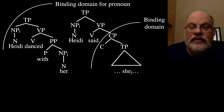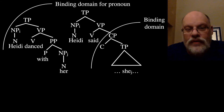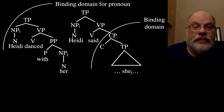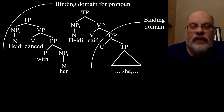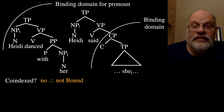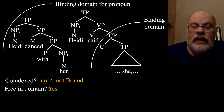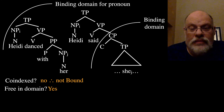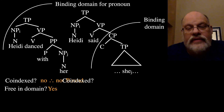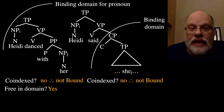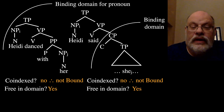Let's consider a few more cases with different indexing. These ones are going to be trivial because the indexing is different, so there are no bindings. Heidi has the index i, and her and she have the index j, meaning they have different reference. So are they co-indexed? No — and we can stop right there. It's not bound, which means that pronoun is free in its domain. It has no antecedent, and that means it meets Principle B. The same is trivially true for the tree on the right-hand side: there is no co-indexing, which means they're not bound, and that means it's going to be free in its domain. In both cases, it meets the condition of Principle B — that pronouns need to be free within their domain.